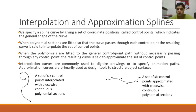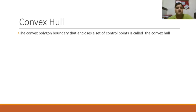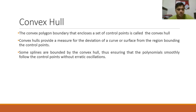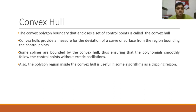There is a concept called the convex hull. Whenever we draw a curve, it follows certain properties, and one basic property is that it resides inside a convex hull. A convex polygon boundary that encloses a set of control points is called a convex hull. Convex hulls provide a measure for the deviation of a curve from the region bounding the control points. Some splines are bounded by the convex hull, ensuring that the polynomials smoothly follow the control points without erratic oscillations.